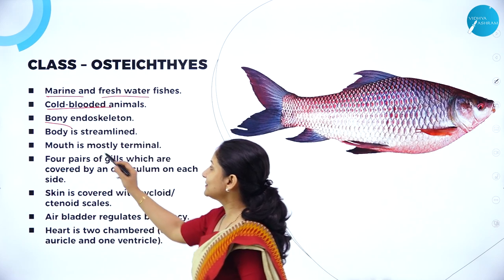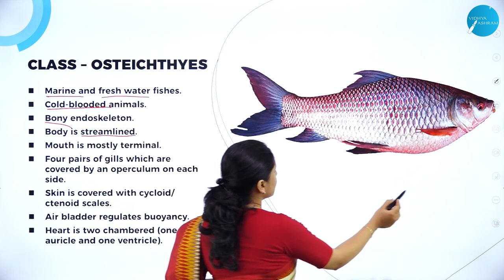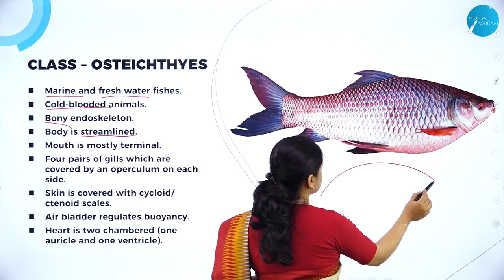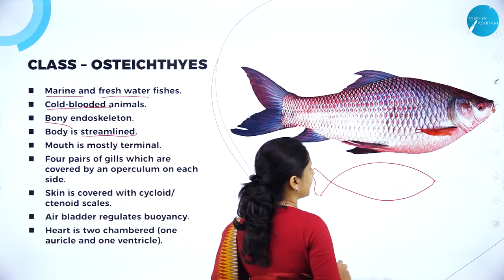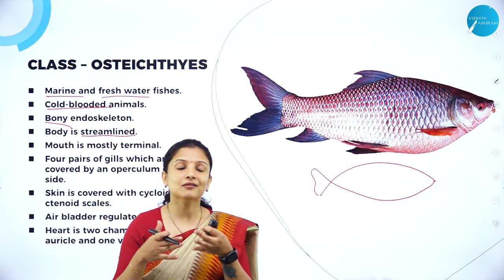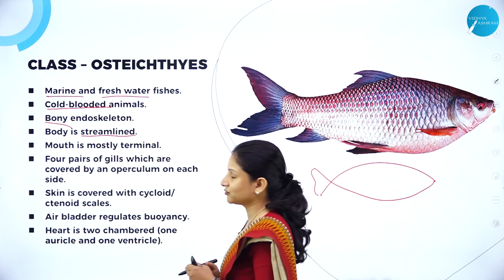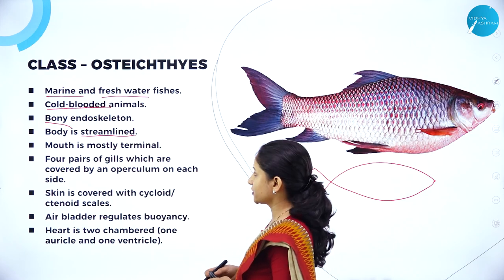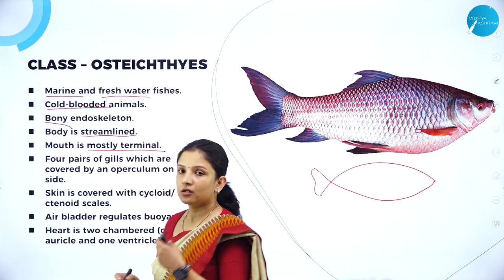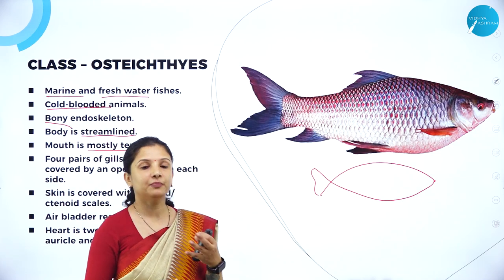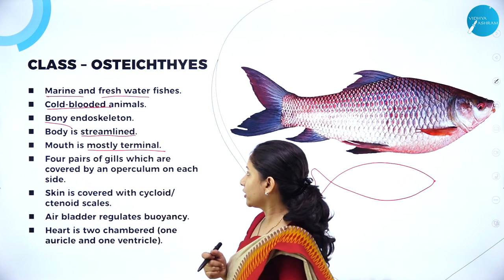The body is streamlined — if you look at the shapes of fishes, they are streamlined — so that they can cut through the water currents and swim fast. That is one of the adaptations of fishes. The mouth is mostly terminal to facilitate feeding, positioned at the base of the head.